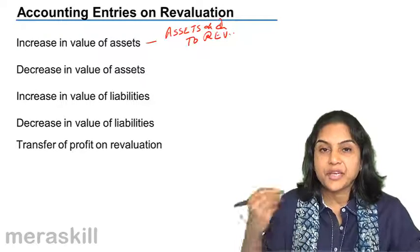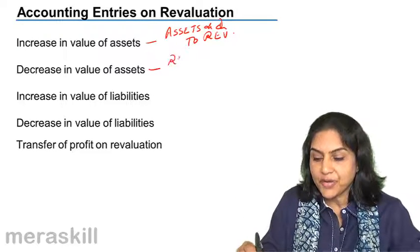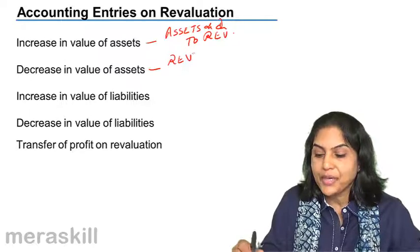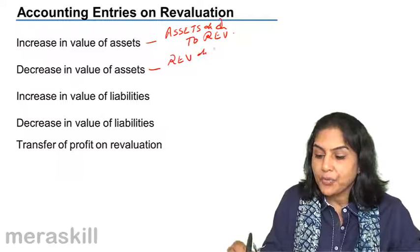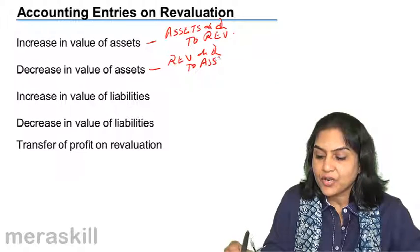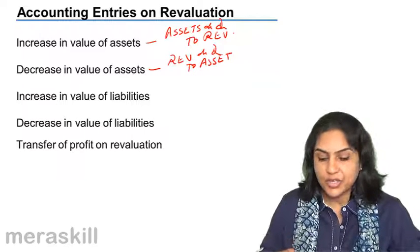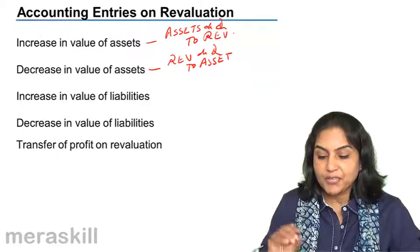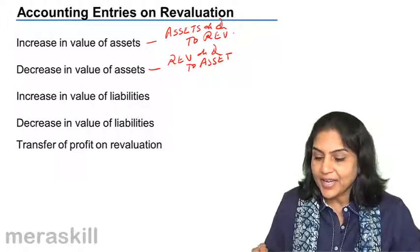If there is a decrease in the value of assets, we decrease it. Therefore, we credit the asset account and debit the revaluation account. If there is an increase in the value of liabilities,